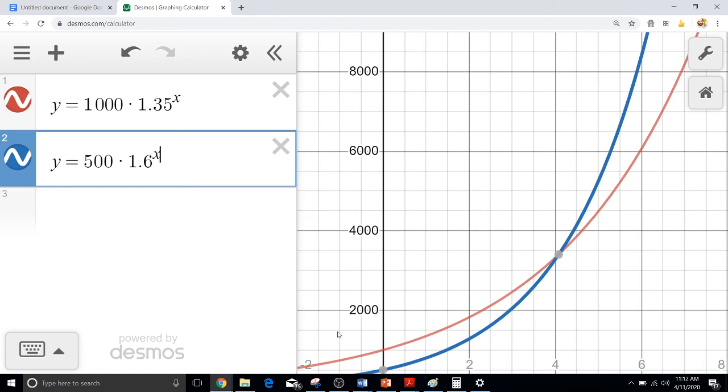We can actually see right around here is where it begins at 500, and it goes and goes, and somewhere right around here it crosses our first function and shoots on up.